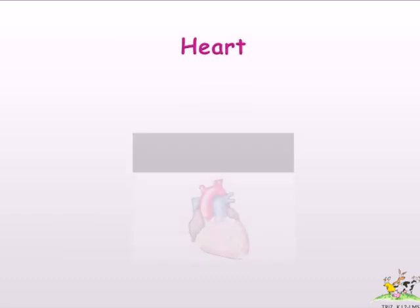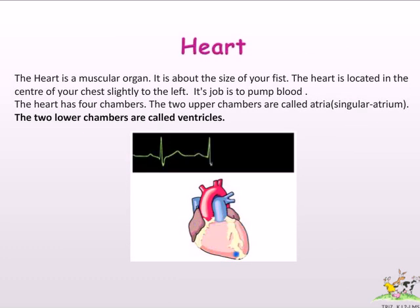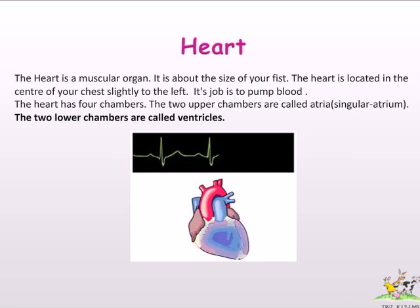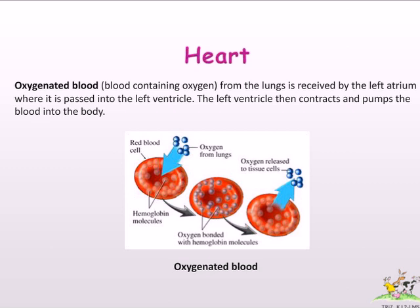The heart is a muscular organ, about the size of your fist. It is located in the center of your chest, slightly to the left. Its job is to pump blood. The heart has four chambers. The two upper chambers are called atria (singular: atrium), and the two lower chambers are called ventricles. Oxygenated blood from the lungs is received by the left atrium, where it is passed into the left ventricle, which then contracts and pumps the blood into the body.